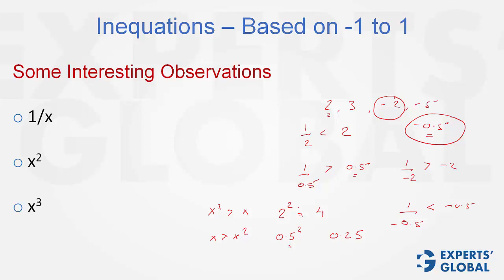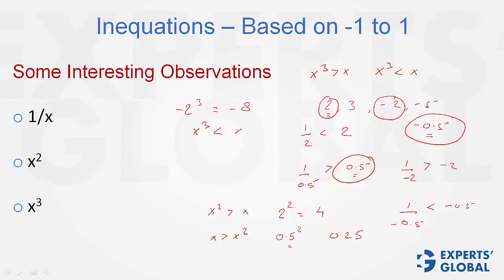In case of x cubed: for big positive numbers, x cubed is greater than x. However, for small positive numbers such as 0.5, x cubed is going to be less than x — 0.5 cubed is 0.125, much smaller than 0.5. For big negative values, minus 2 cubed becomes a much bigger negative number, and therefore x cubed is less than x. However, for small negative values such as negative 0.5 cubed, this becomes a smaller negative value, and therefore x cubed becomes greater than x. So the values play a big role in how the inequality behaves.